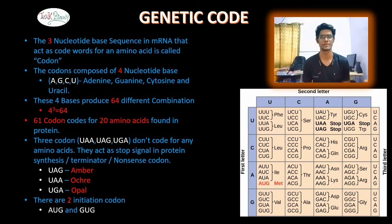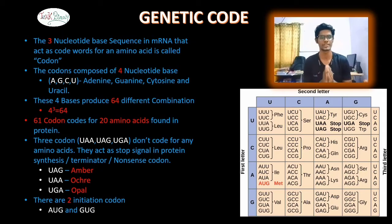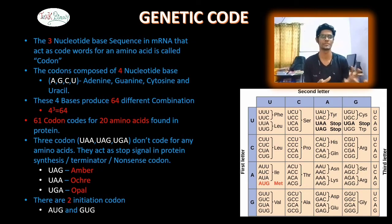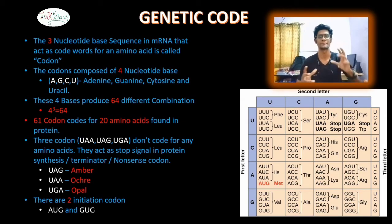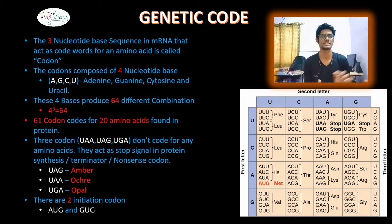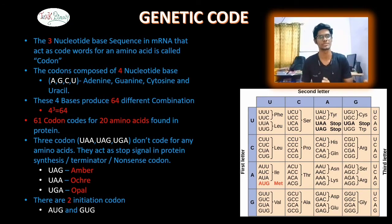Let's talk about genetic code in this video. The three nucleotide base sequences in mRNA that act as a code word for amino acids are called codons. In mRNA, nucleotides are grouped 3-by-3 over amino acids — that is a codon.